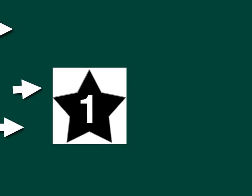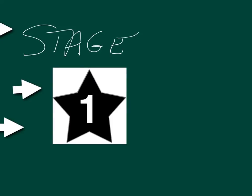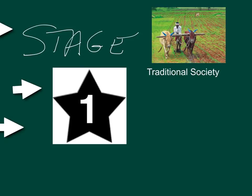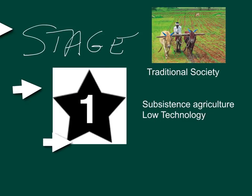Stage 1 is characterized by subsistence agriculture and low technology. Rostow referred to this as a traditional society. In the modern world currently, no countries are considered to be in this stage of development.